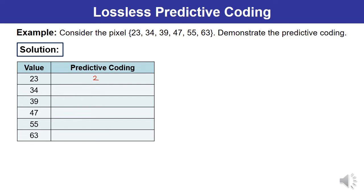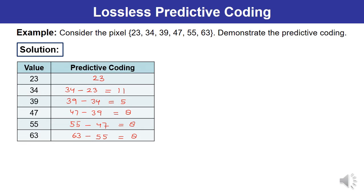The predictive coding differences are computed as follows: first value is 23, then 34−23 = 11, then 39−34 = 5, then 47−39 = 8, then 55−47 = 8, and finally 63−55 = 8.